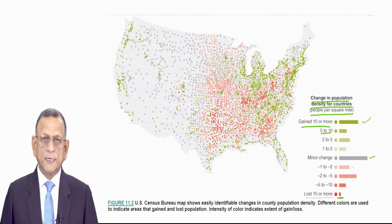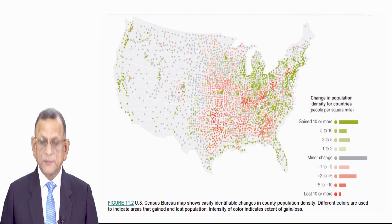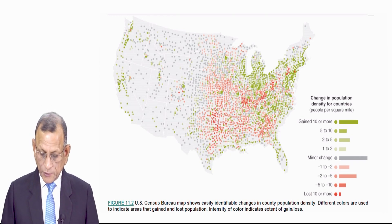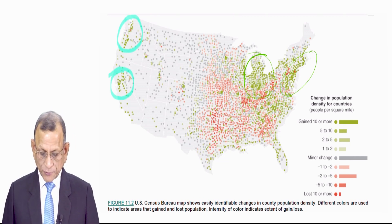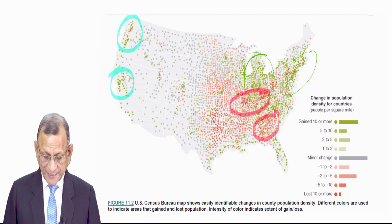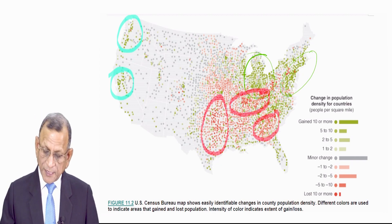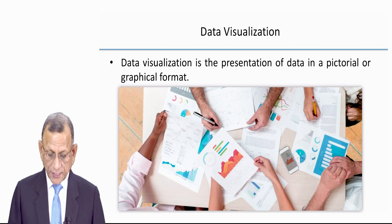On the basis of this, you can take lots of business decisions and government decisions about planning and management. From the business angle, we may say: let me open new stores in this area, and this area is also perfect for opening new stores. Or if the need is so, then I may close down a few stores in this area, particularly where the population density is going down. So now we understand the power of data visualization — this is graphical presentation of data.